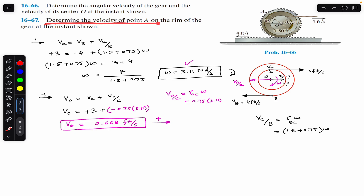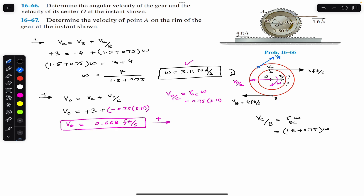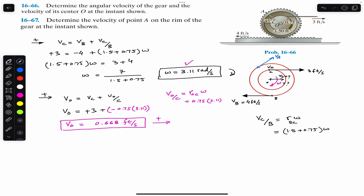In the second problem, we are asked to determine the velocity of point A on the rim of the gear at the instant shown. Since the gear has angular velocity in the clockwise direction, point A will have a velocity tangent to the circle in a specific direction. If we join point O with A, it makes a 45-degree angle with the horizontal as given.